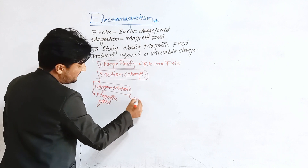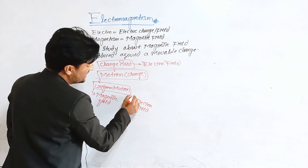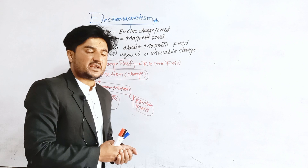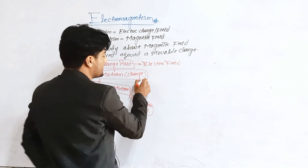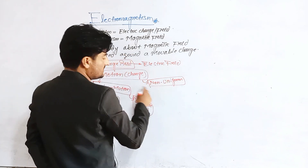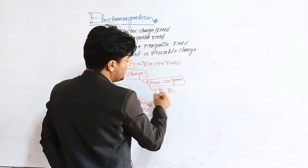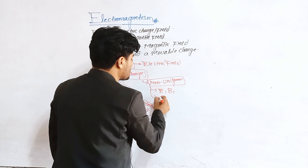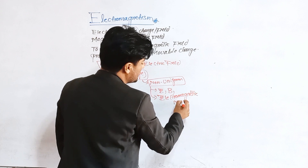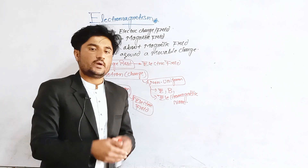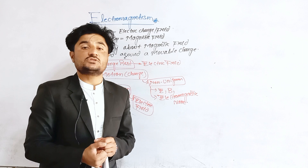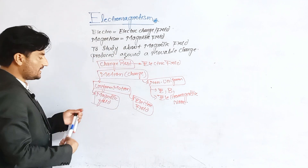If you have a charge in motion and that motion is uniform motion — non-accelerated motion — then it produces both electric and magnetic fields. But if the motion is non-uniform or accelerated motion, then the charge produces electromagnetic waves, and it loses energy in the form of electromagnetic waves.